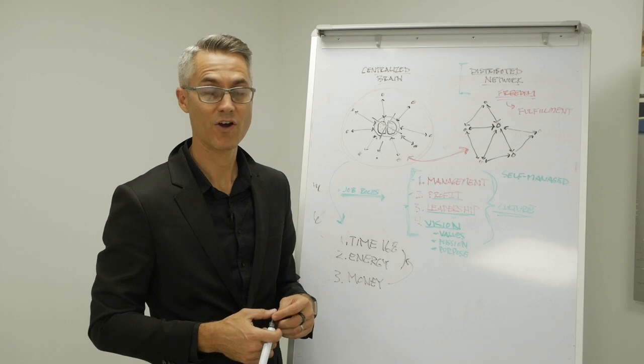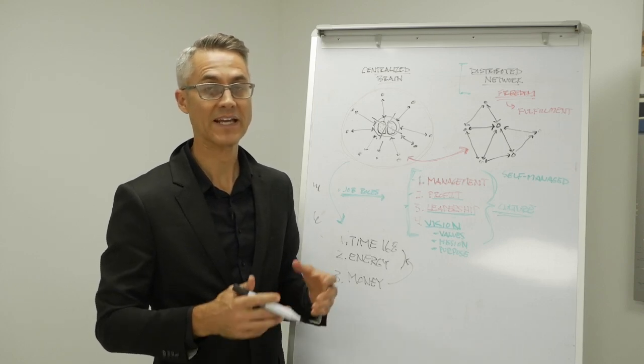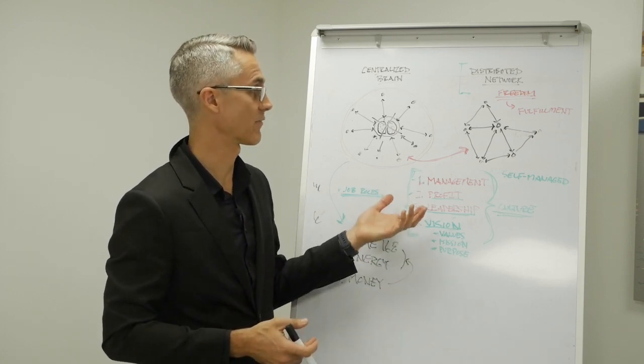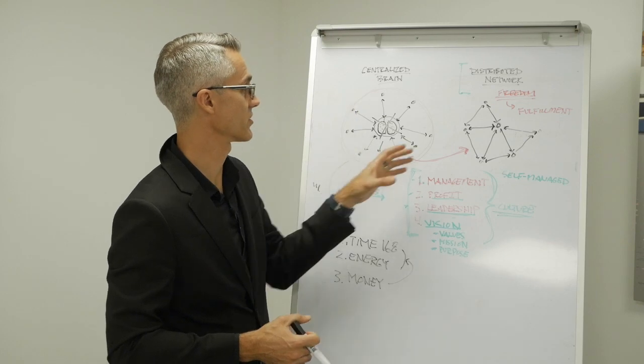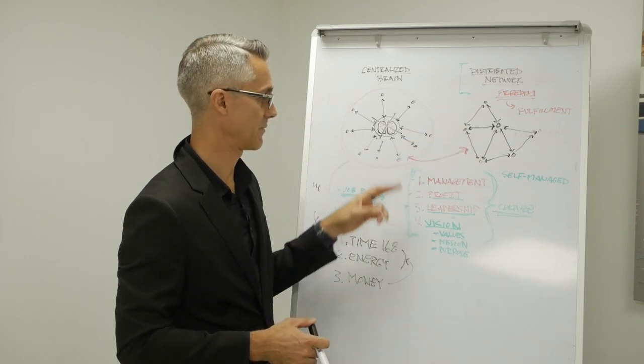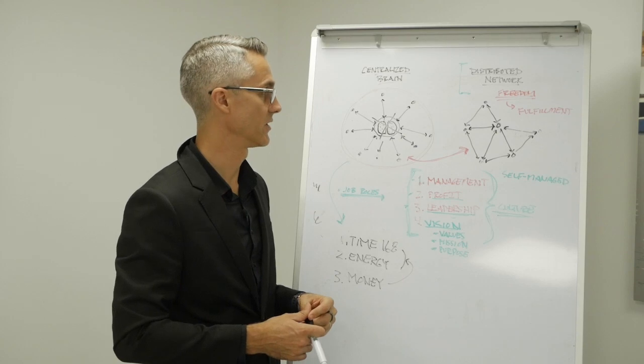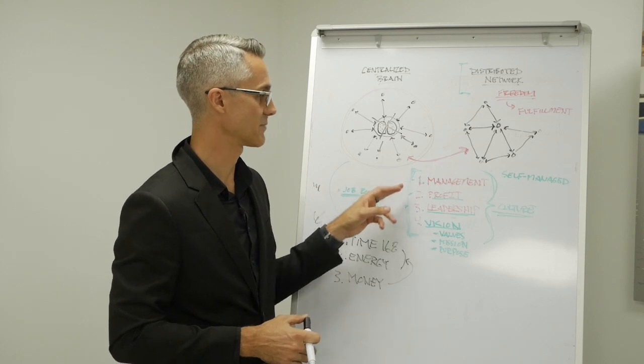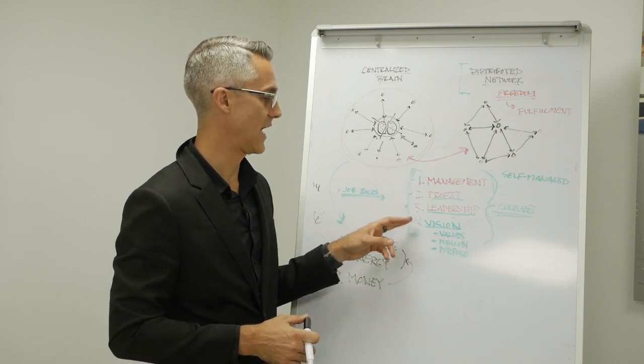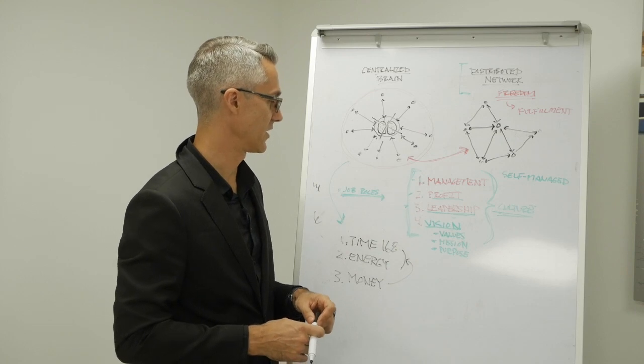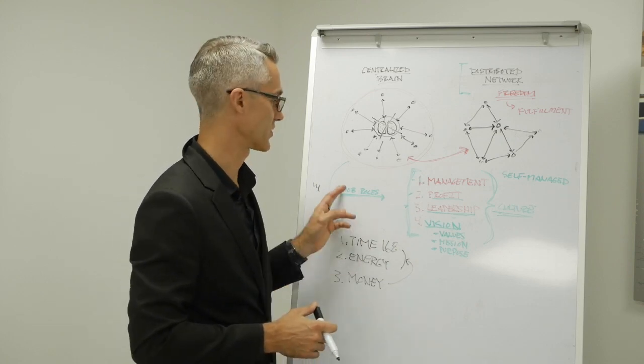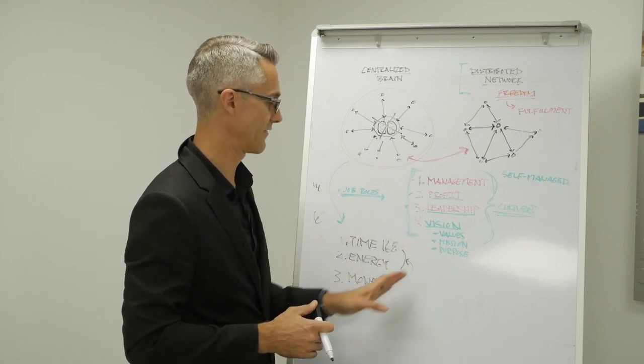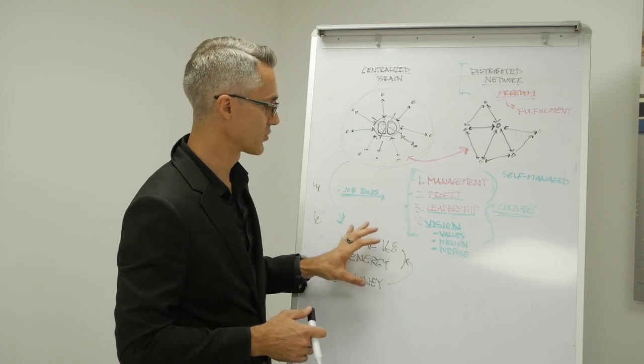So that's it for today's video. I hope you got a lot of value out of today's video. At the beginning, I promised to show you the roadmap to creating a self-managed firm. And that's what we've done right here. We've talked about this idea of the centralized brain structure versus the distributed network. We talked about the four pillars of building a distributed network type of firm, a freedom or self-managed firm that runs practically on autopilot by having management systems, profit systems, leadership systems, and of course, all this built on the foundation of a vision. We talked about the importance of having clearly defined job roles, which is just one small piece of these four pillars right here.